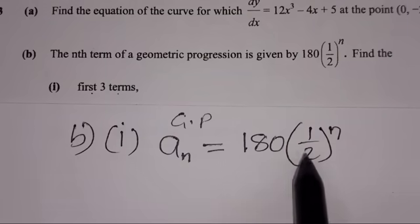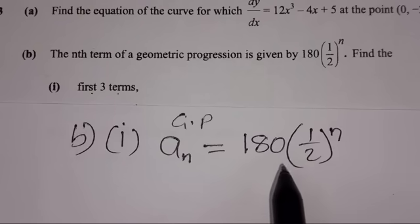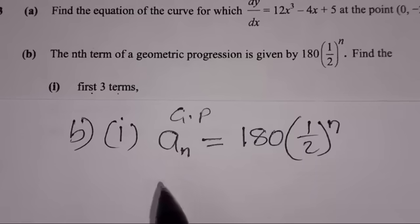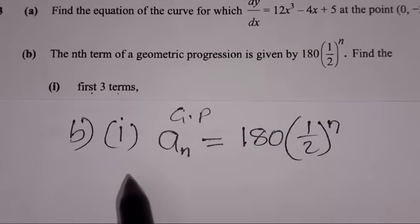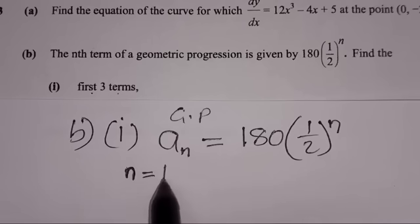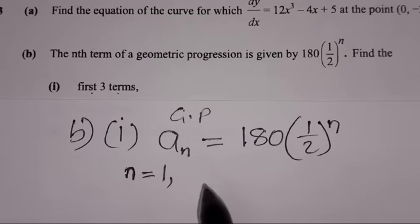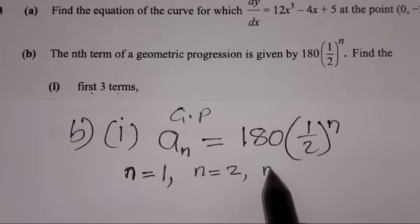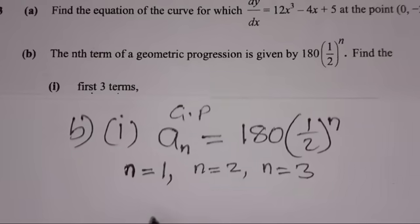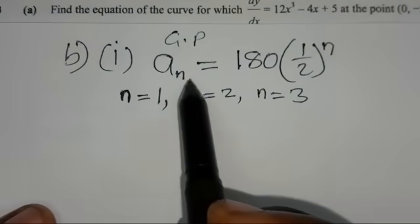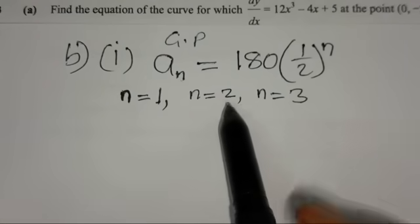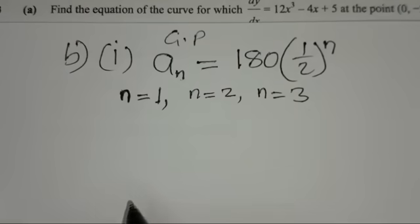For the first three terms: when they say first, n equals 1; for the second term, n equals 2; and for the third term, n equals 3. We are going to replace n with each of these values in the formula.